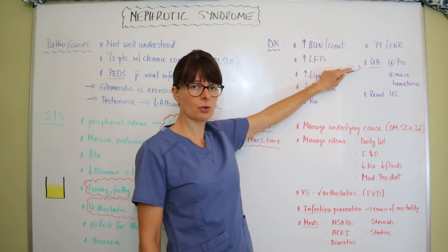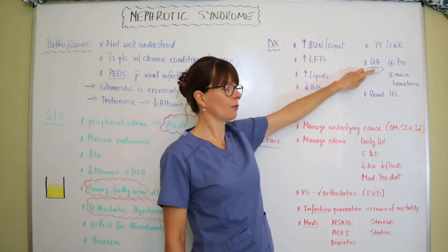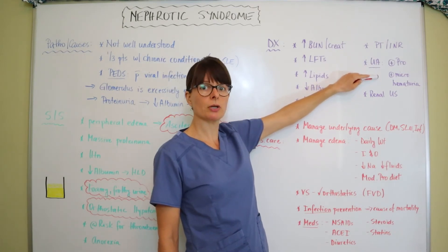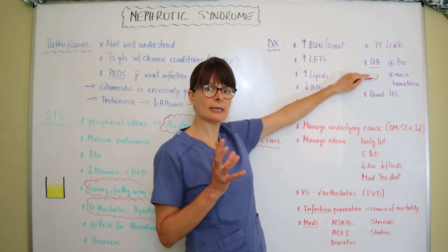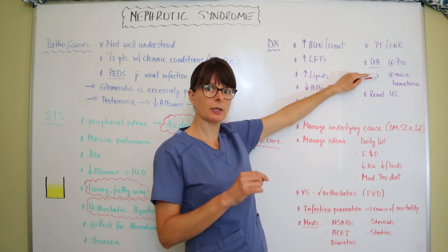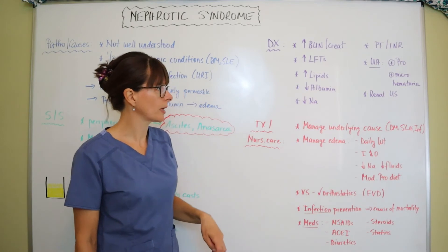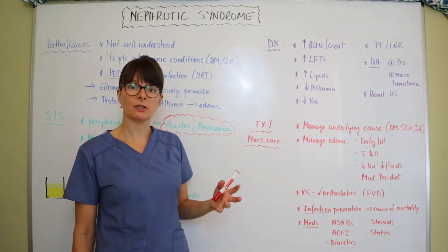Their urine samples, certainly they'll be positive for protein. Like I already mentioned, there will be microscopic hematuria, so it won't be bright red to the naked eye, but if we do a dipstick, it will show some blood cells on there. Renal ultrasound as well is indicated.